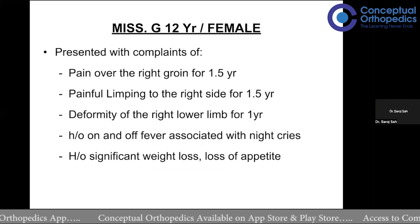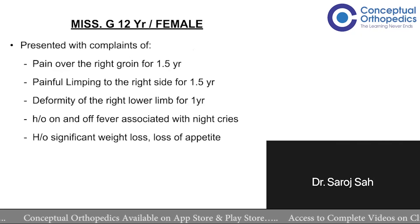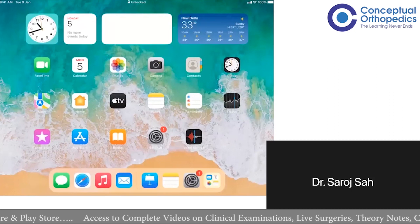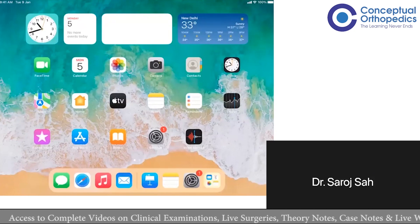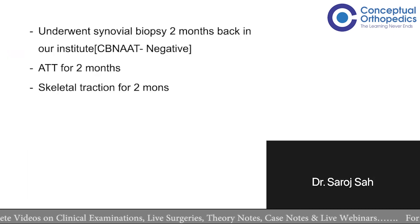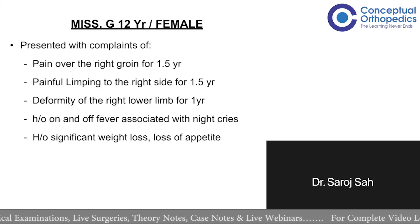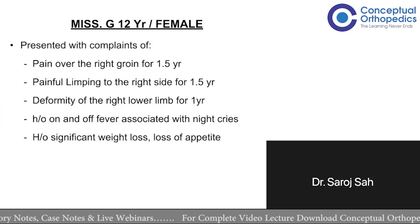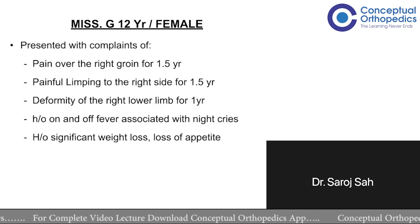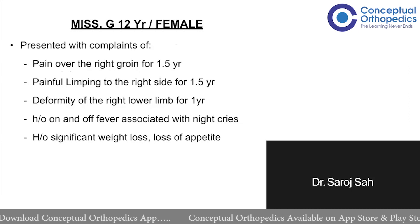Miss G, actually a female. She was apparently well one and a half years back. She then developed pain in the right inguinal region, which was insidious in onset and progressive, non-radiating, aggravated on working, and relieved with medication. The pain was severe in intensity and associated with night cries. The patient also complained of limping — painful, progressive — with difficulty in activities of daily living and difficulty in walking, which was progressive.